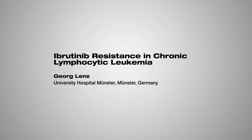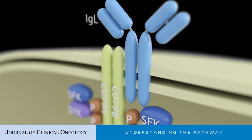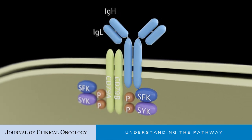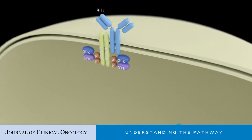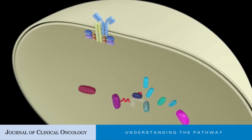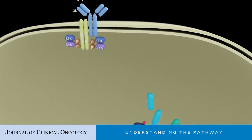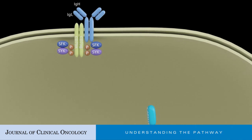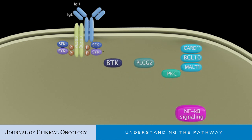Ibrutinib resistance in chronic lymphocytic leukemia. Constitutive activation of B-cell receptor (BCR) signaling plays a crucial role in the molecular pathogenesis of various B-cell malignancies, including chronic lymphocytic leukemia (CLL). Constitutive BCR signaling activates different oncogenic pathways such as the nuclear factor kB (NFKB),